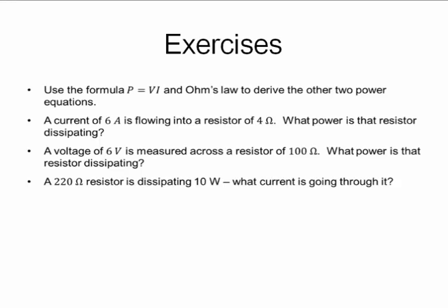Now we will work out some more numericals. Use the formula P is VI and Ohm's law to derive the other two equations. First one. Current of 6A is flowing through a resistance of 4 ohms. What is the power? We know that P is, using those equations from the last slide, I square R, so it is 6 square, multiplied by 4, 144 watts.